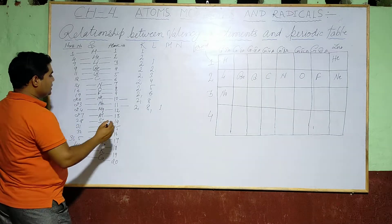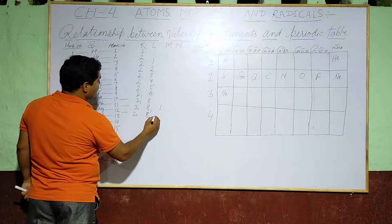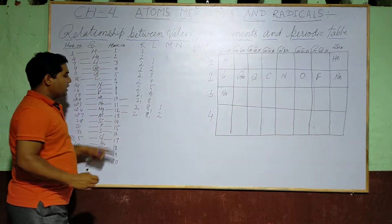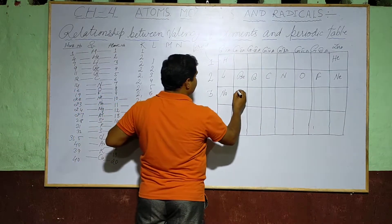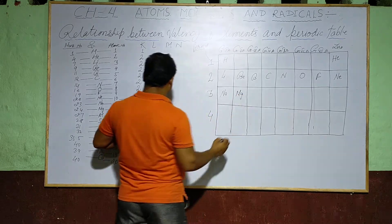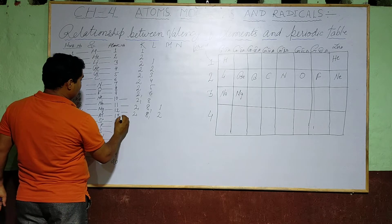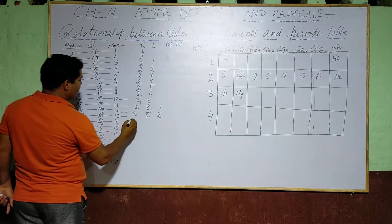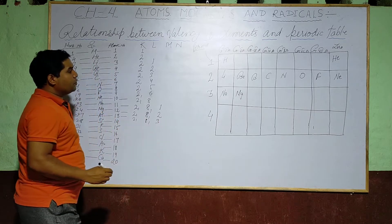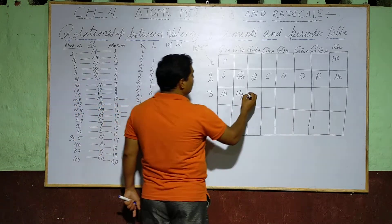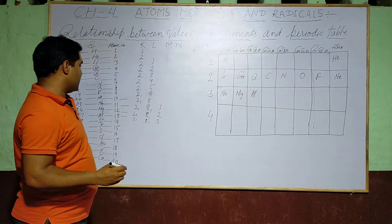Magnesium has configuration 2, 8, and 2 — placed in Period 3, Group 2A. Aluminium has configuration 2, 8, and 3 — placed in Period 3, Group 3A.